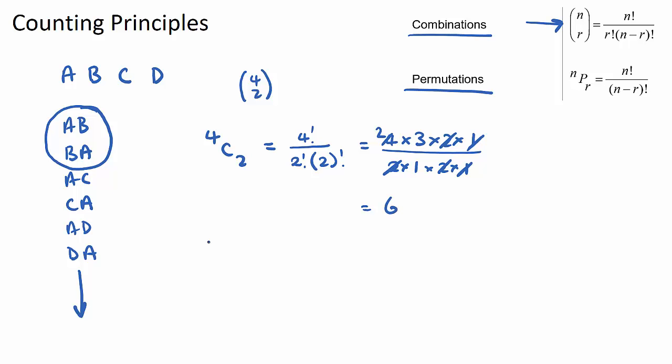Now this is different to 4P2 permutations. The formula is slightly different, there's no r factorial on the bottom line here, so it would just be 4 factorial over 2 factorial, which would be 4 times 3 times 2 times 1 over 2 times 1, therefore there will be 12.